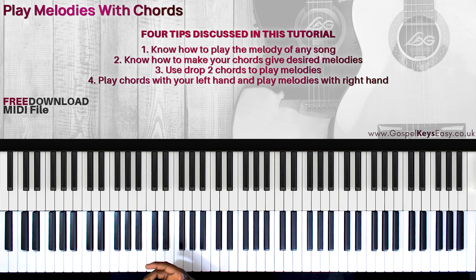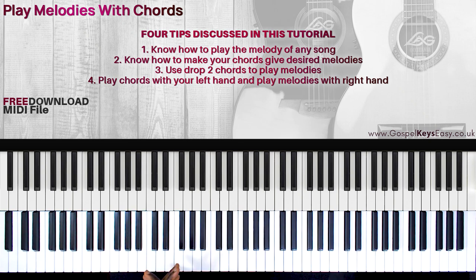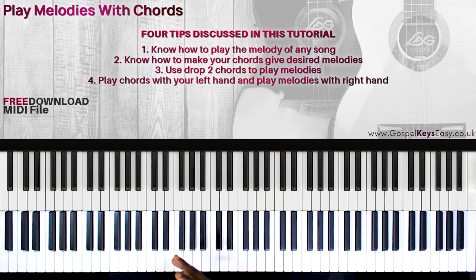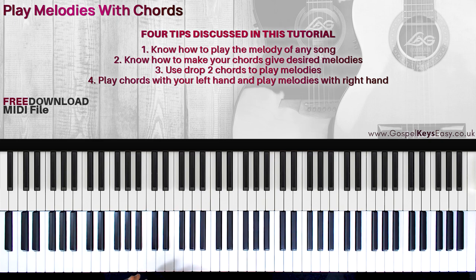This is something you can master through practice, and there are ways you can get there gradually. I'm going to show you a few things you can start to do to get you to that level. The first thing you need to be able to do — and I already mentioned this — is play the melody of any song anytime. Once you get that out of the way, the next thing you can try to do is use drop 2 chords to play the melodies of a song.